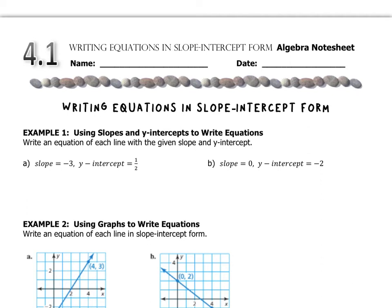In Chapter 3, we talked about y equals mx plus b, how that's slope-intercept form. So we're going to take that and use the slope and intercept to create equations. Rather than already having the equation and making the graph, we're going to have the graph and make the equation.